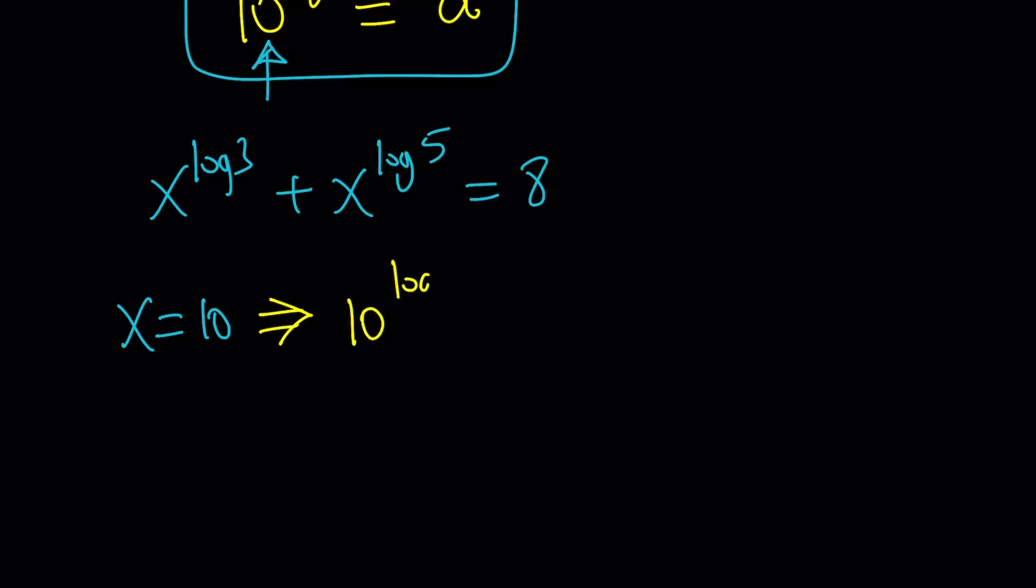So now, then we get 10 to the power log 3 plus 10 to the power log 5. And from this identity we just talked about, this is equal to 3, and that's equal to 5, and 3 plus 5 is equal to 8. Awesome. So x equals 10 works, and that seems to be the solution. Is that the only solution, though? Good question.